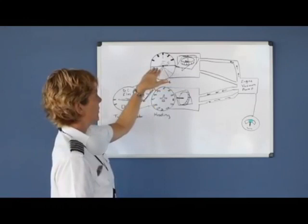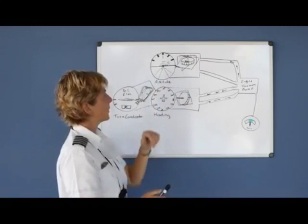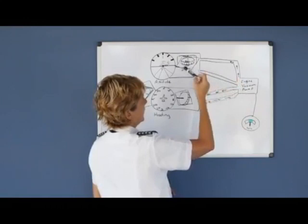So we call that principle rigidity in space. And as long as this gyro is spinning fast enough, it'll stay the same as the horizon. So the horizon stays still, and we actually rotate around it how we see the image displayed on your attitude indicator.